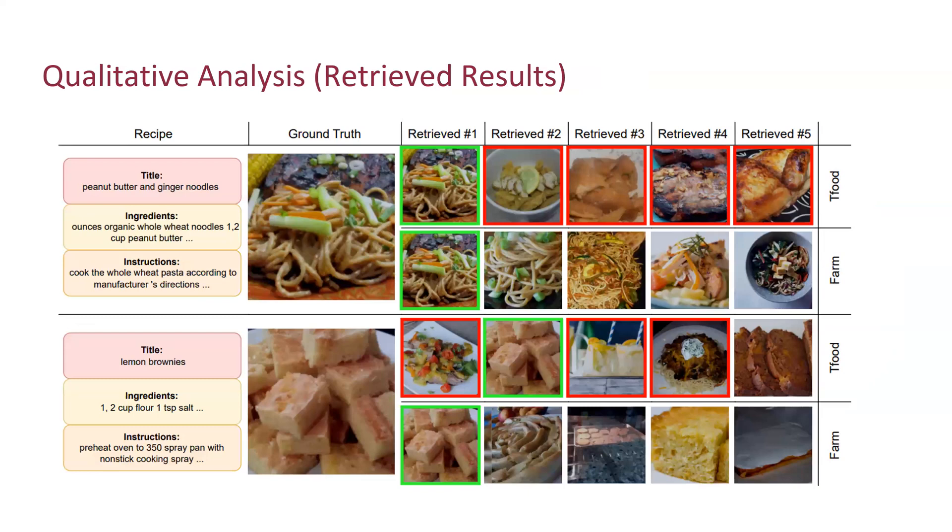Here, we're showing some retrieval samples from image-to-recipe retrieval tasks. We observed that while both methods retrieve the correct recipe image, all top five retrieval images by FARM are semantically related, consistently featuring noodles or baking in all the retrieved samples. In contrast, T-food, although it's capable of retrieving the correct answer, the other retrieved samples are sometimes irrelevant. This might indicate a tendency of emphasizing peripheral recipe components, such as insignificant ingredients within the dish.